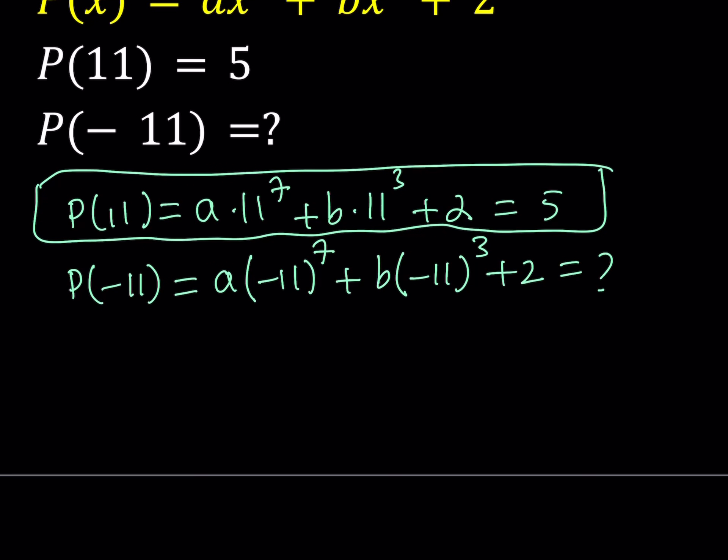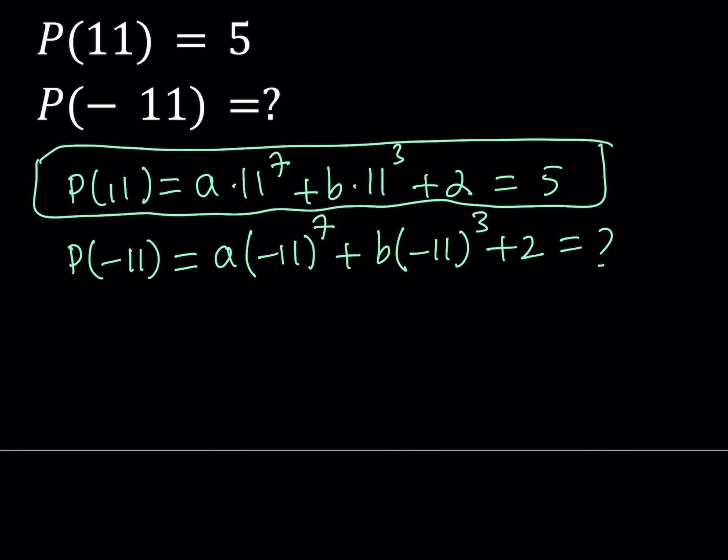But one thing we can do is, we can just go ahead and isolate some of the terms. So we can write this as 11 to the 7th power A plus 11 to the 3rd power B. And since plus 2 is equal to 5, it's just going to be 3. If you subtract 2 from both sides, then you're going to get our expression to equal 3. Okay, that's the first finding.